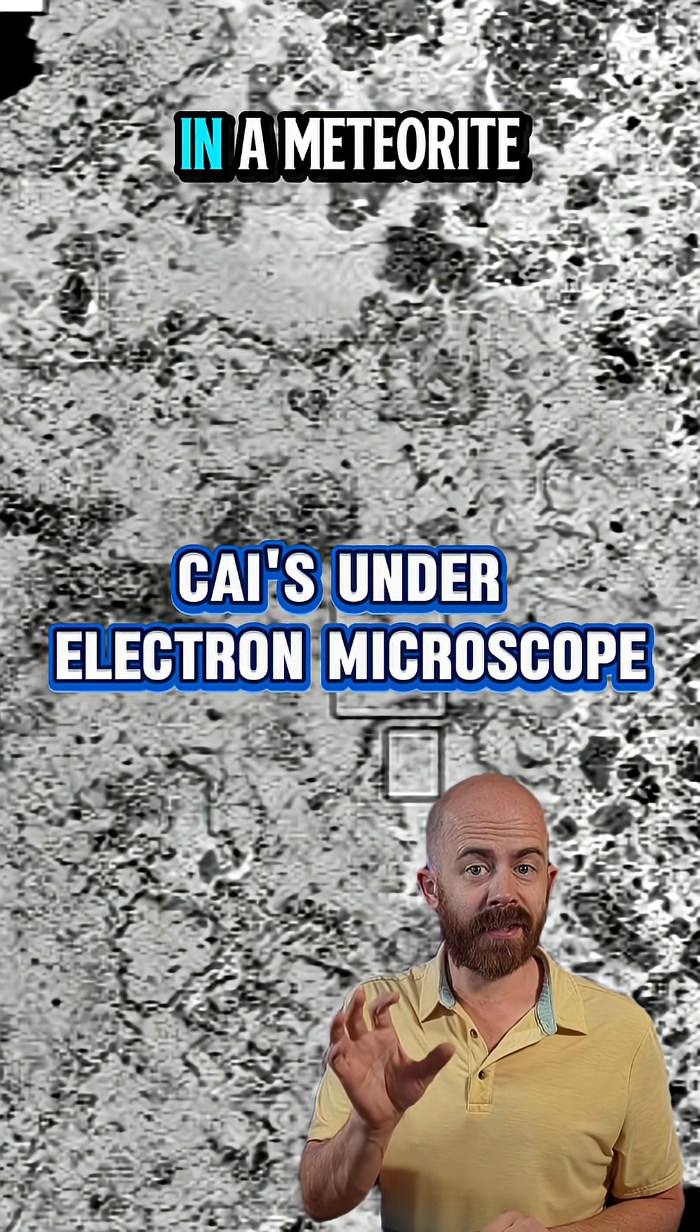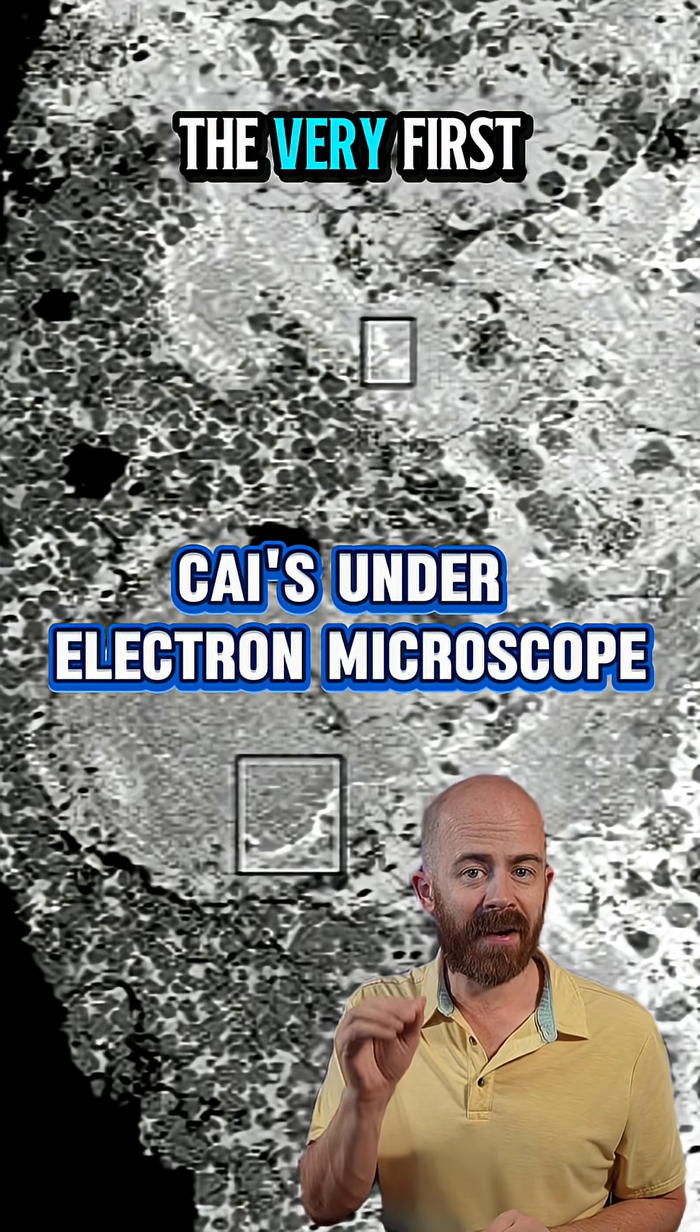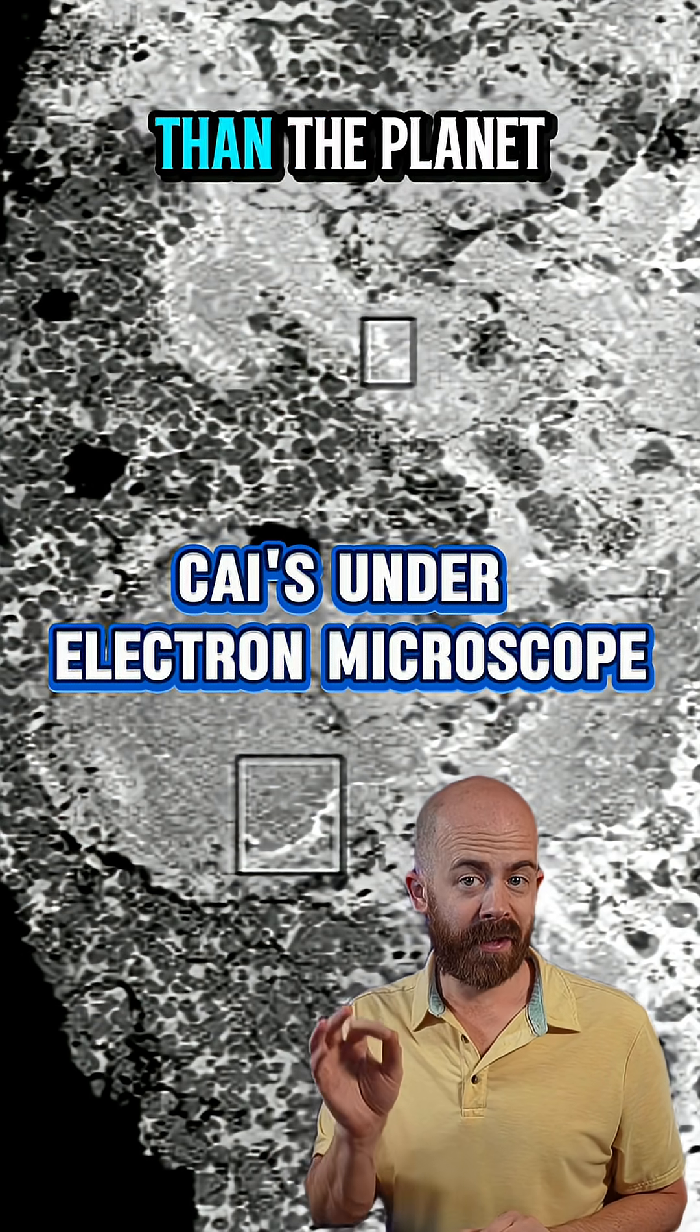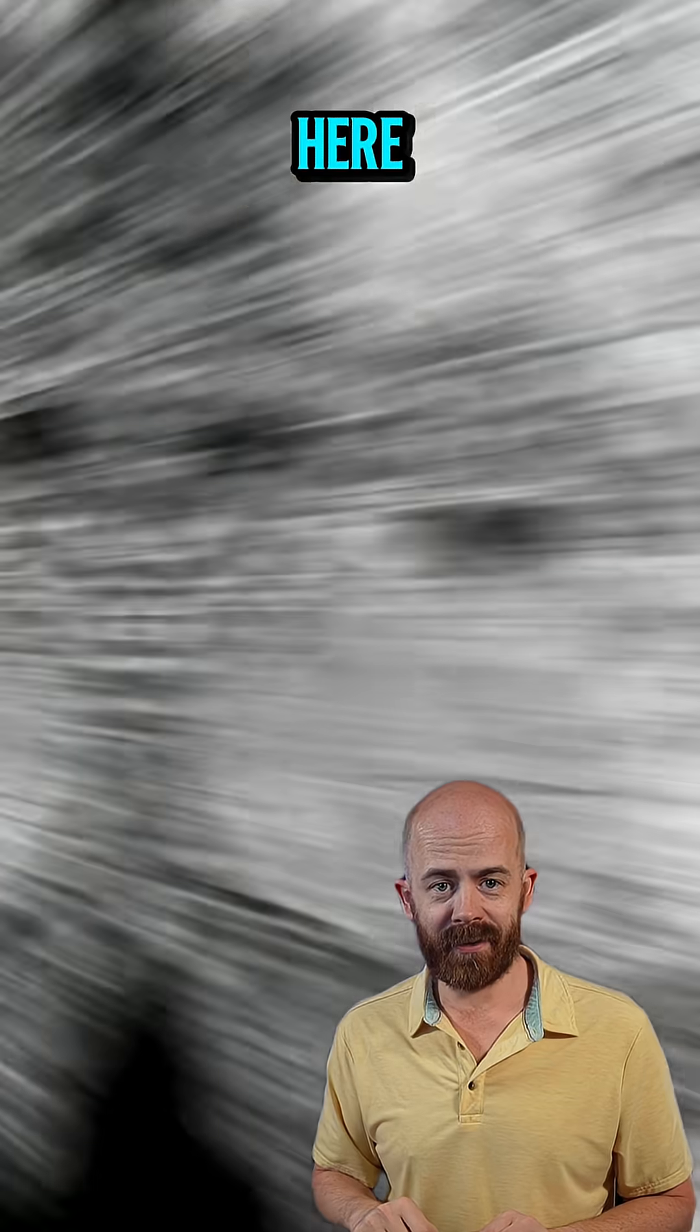Next time you see those bright white spots in a meteorite, remember, you're looking at the very first solids our solar system ever made. They've been around longer than the planet you're standing on, and they traveled a long, long way to be here.